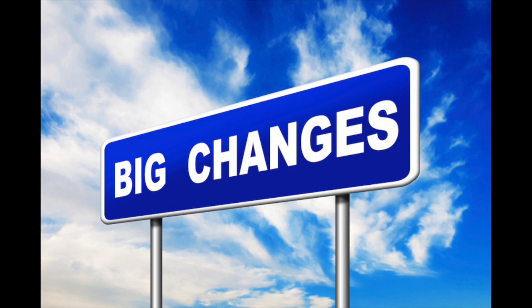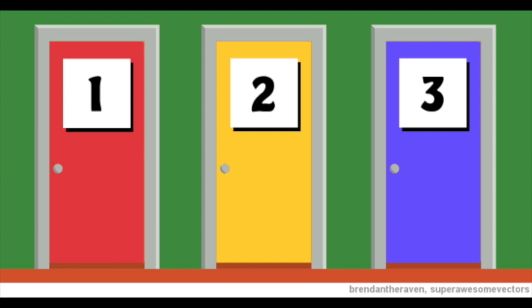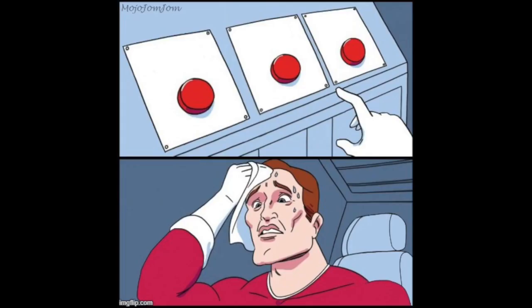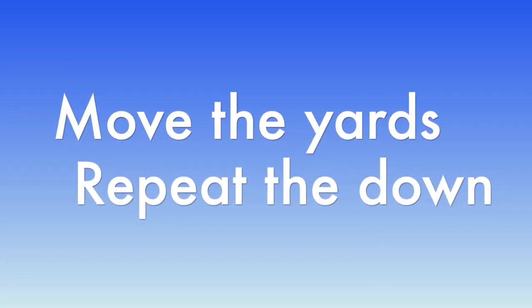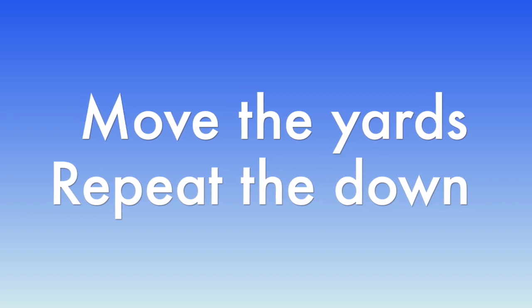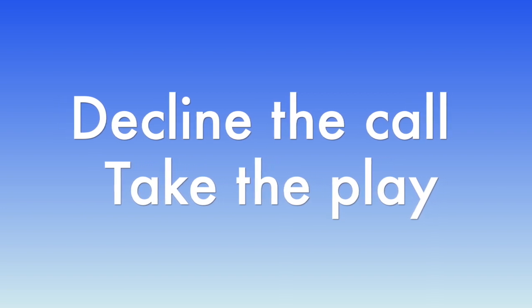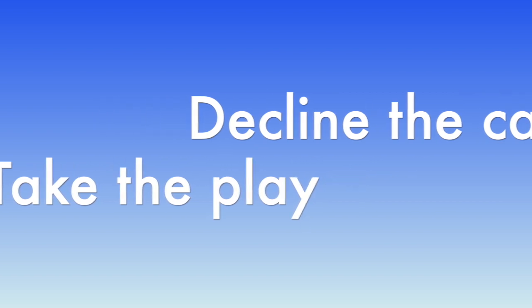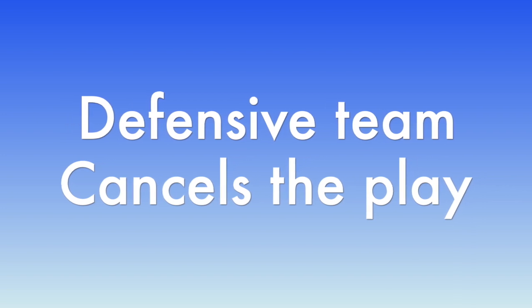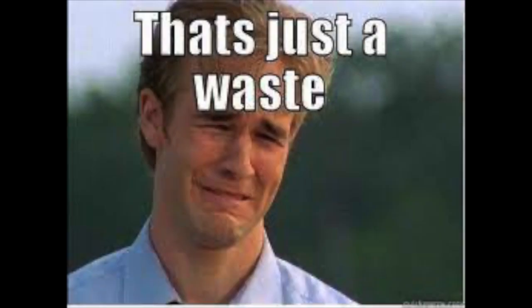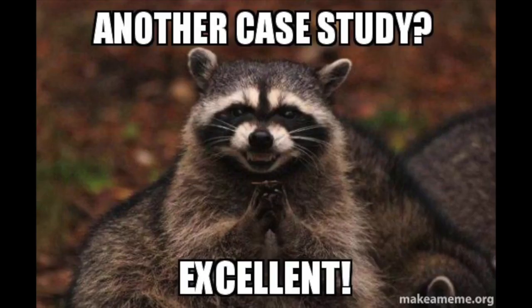One of my biggest changes: there should be a third option for the defensive team on penalty enforcement of an offensive penalty. Obviously we have: take the yardage and give the offense the play again, or decline the penalty if there's a turnover or tackle for loss. But I'm coming up with a third option — the defensive team makes the offensive team lose a down, meaning the ball goes back to the original line of scrimmage, new down, just like the play was a waste.